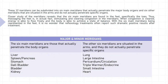Of these 12 meridians, they can be subdivided into six main meridians that actually penetrate the major body organs and six other meridians that are situated in the arms and do not actually penetrate specific organs. Closest study of the meridians reveals that the six main meridians are found in the feet, specifically the toes. Thus, massaging the feet is in actual fact stimulating and clearing congestion in the meridians. When congestion is cleared, energy is able to flow freely and the body is able to achieve a state of balance. With the six main meridians represented in the feet, it is no wonder that reflexology treatments often report such dramatic positive results after treatment.